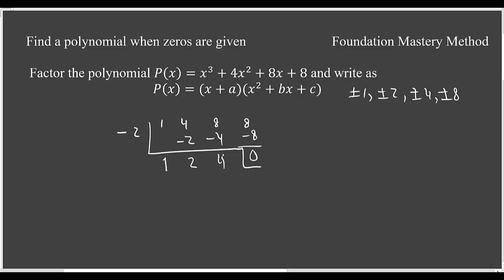Now remaining is 1 times x squared plus 2x plus 4 equals 0. So we don't need to write 0. We just want to write our polynomial as this.